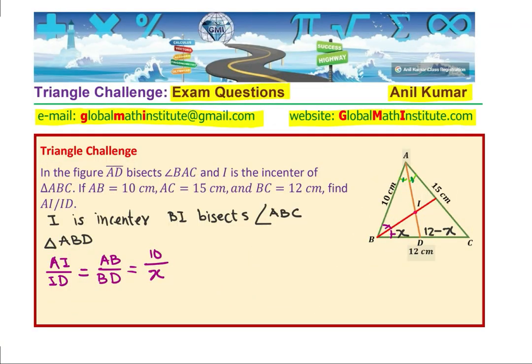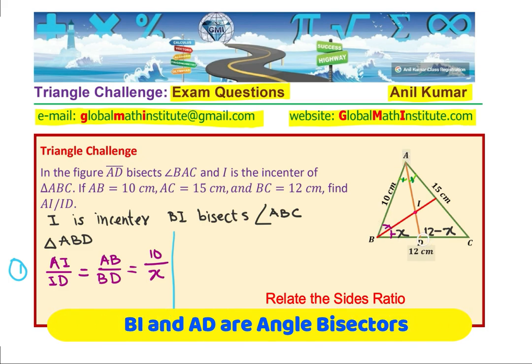Now let's continue with our solution. We got one set of equations looking into triangle ABD. Now we were given that AD is an angle bisector, and therefore let us look into the other triangle, which is triangle ABC.